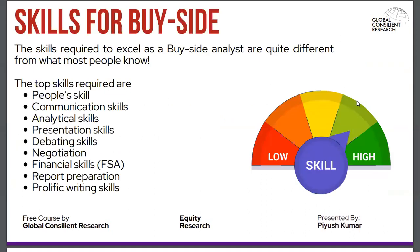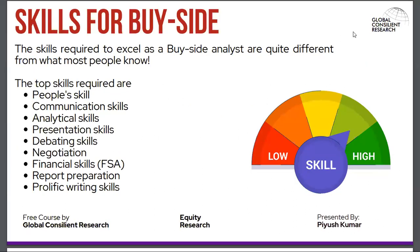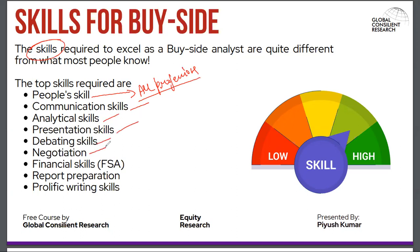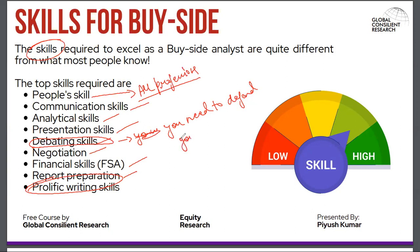You will be required to deal with the management of the companies you track — attending conference calls, meeting management, and asking the right questions. Asking the wrong question could risk getting insider information, so you need to be careful. The skills required on the buy side include people skills, communication skills, analytical skills, presentation skills, debating skills, negotiation, financial skills, report writing, and quality planning. Debating skills are especially important here because you need to defend your stock ideas to management.